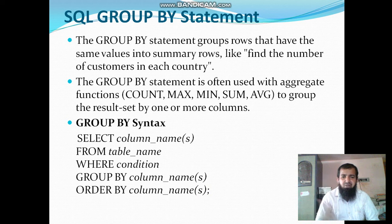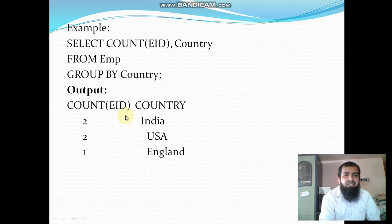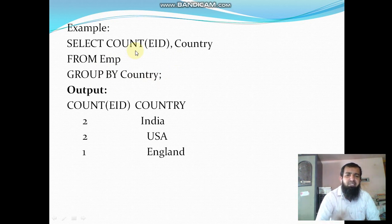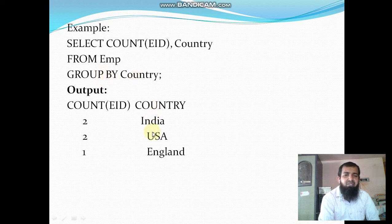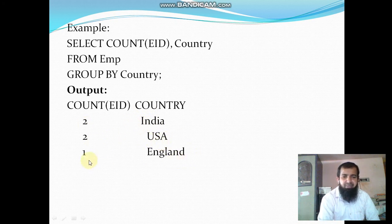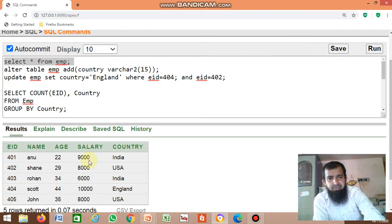For example: SELECT COUNT(EID), country FROM EMP GROUP BY country. This counts how many employees there are along with the country name from the employee table, grouped by country. In this database, the total is: two employees from India, two from USA, and one employee from England.